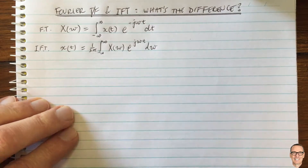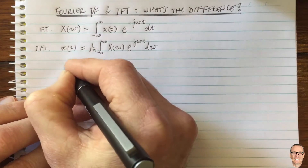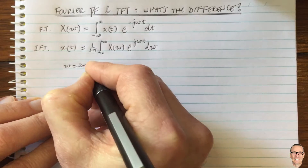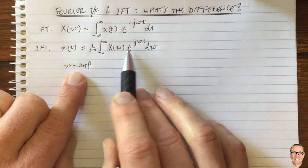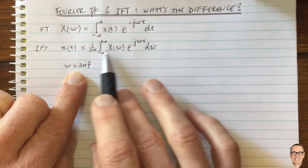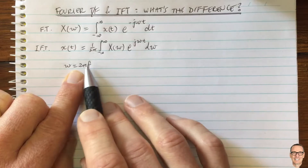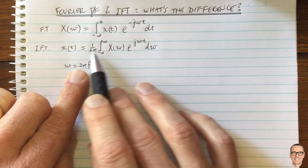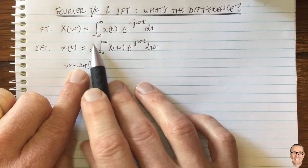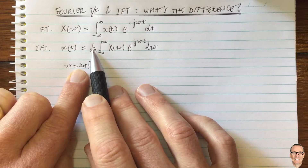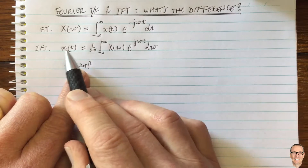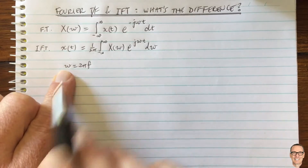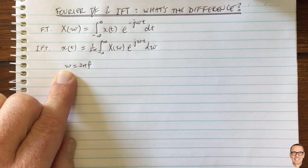Let's address the scaling first of all. That's simply because omega equals 2π f. So you can do a change of variables on this equation, replacing omega with 2π f, and you'll find that the scaling disappears when you write this using f. So that's where the scaling comes from: omega equals 2π f.